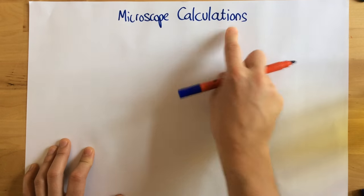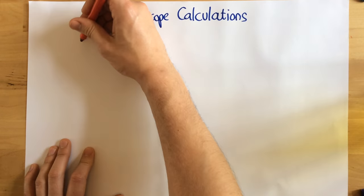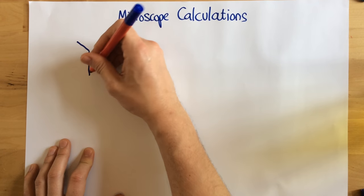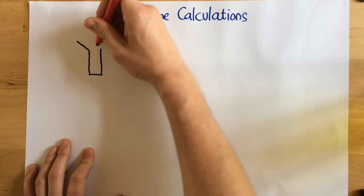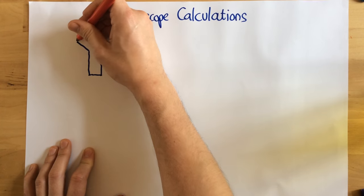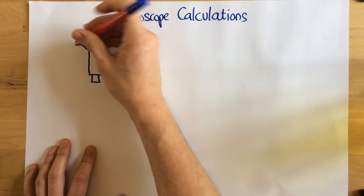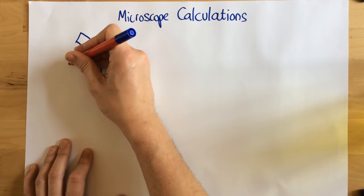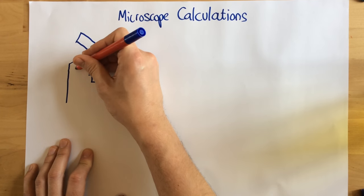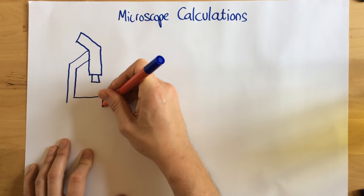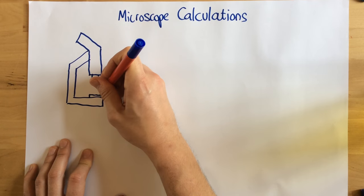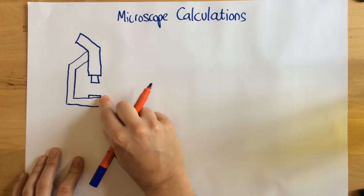Okay, today I'm going to talk to you about microscope calculations, because there's two different types of calculation that we need to do when it comes to thinking about microscopes. So to begin with, I'm just going to draw a diagram of a microscope. So as a quick recap, a microscope is a piece of equipment that we can use that magnifies an image.